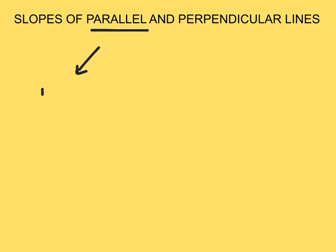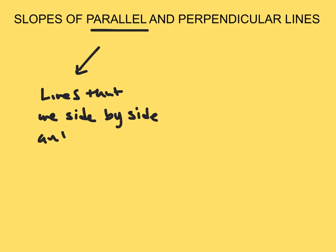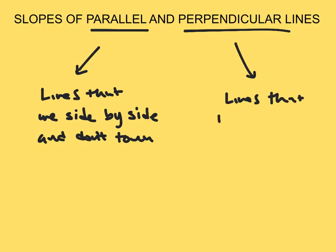Parallel lines are lines that are side by side and don't touch. Perpendicular lines, on the other hand, are lines that intersect and create a 90 degree angle.